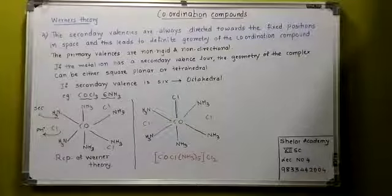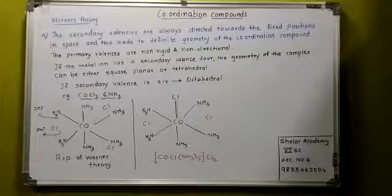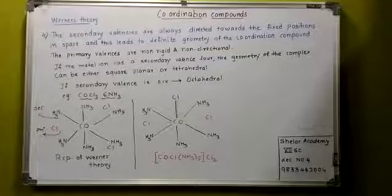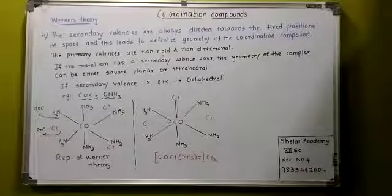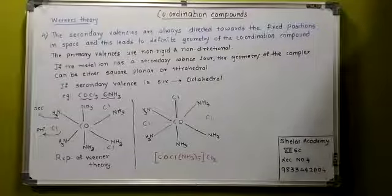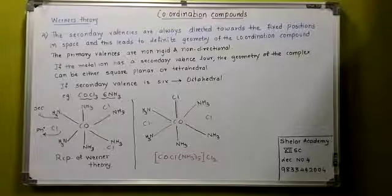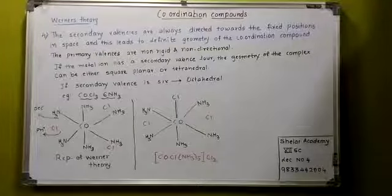An important point here - every metal has got a fixed number of secondary valences, that is it has got a fixed coordination number. Next, the metal atom will satisfy both the primary as well as the secondary valences. Primary valences are satisfied by the negative ions whereas the secondary valences are satisfied either by the negative ions or by the neutral molecules. In certain cases, the neutral ion may satisfy both types of valences. Now up to this we are done in the last lecture.